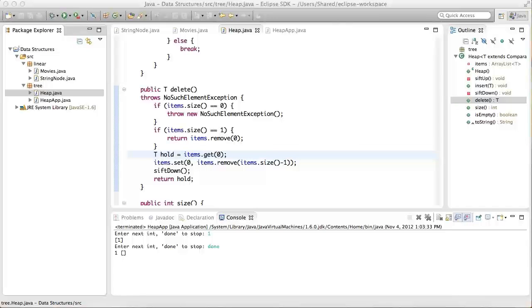If neither of these conditions is true, then there are at least two items in the heap, and deletion proceeds as you have learned. The first item, or the top of the heap, is saved in a variable called hold. The last item is removed and written into the first position, and sift down is called. When sift down returns, the saved deleted item is returned from the method.